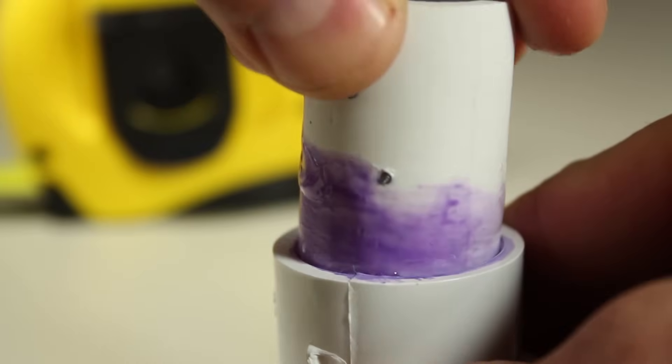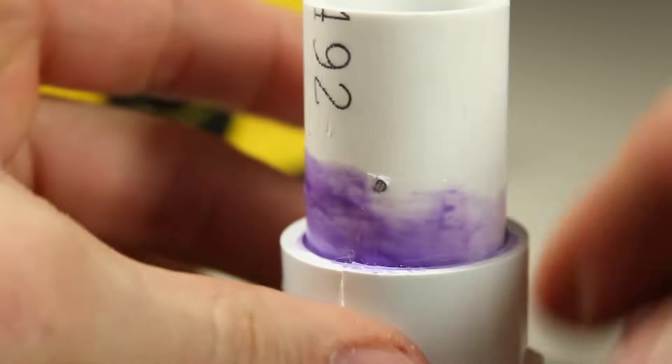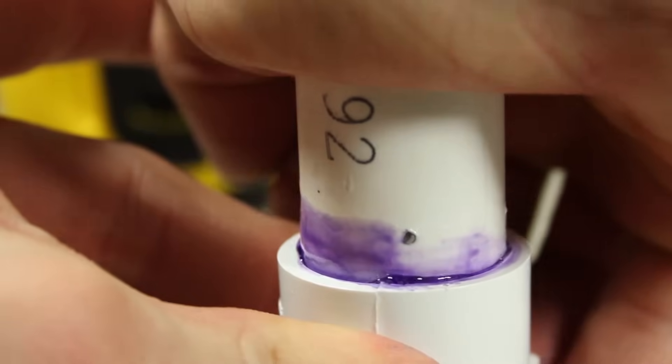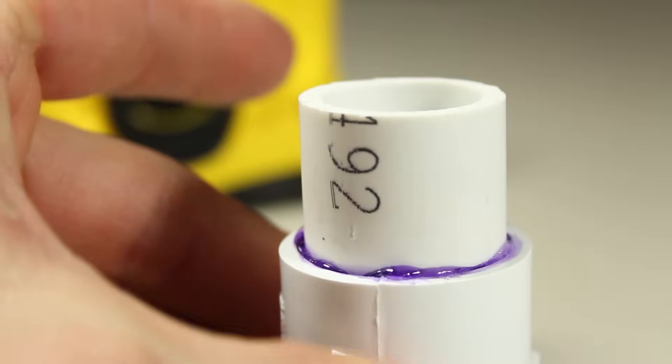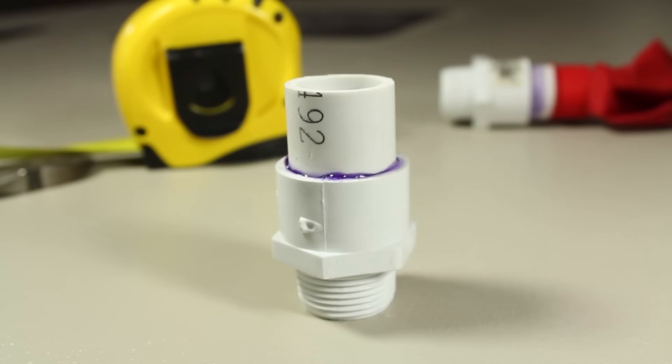PVC cement is added to the pipe, making sure it covers the holes where the nail is set. Then the pipe is pushed down to the point where the holes dip just below the rim of the adapter, so that when the glue sets, this connection will be completely airtight.